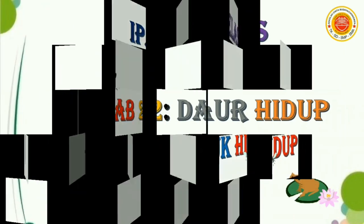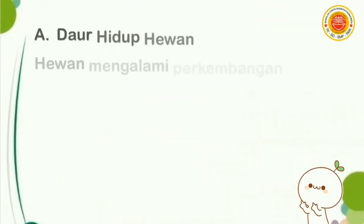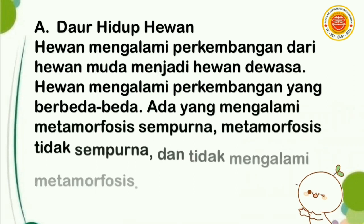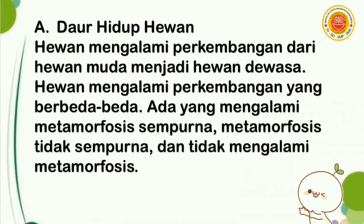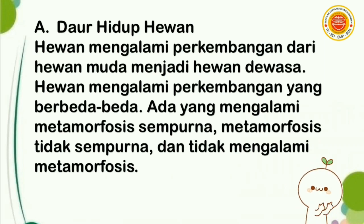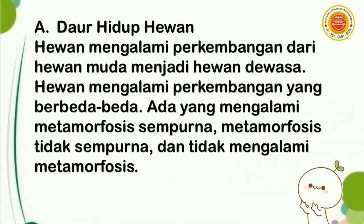Buka buku cetak EPUB dan buka halaman 28 bagian A, daur hidup hewan. Hewan mengalami perkembangan dari hewan muda menjadi hewan dewasa. Hewan mengalami perkembangan yang berbeda-beda. Ada yang mengalami metamorfosis sempurna, metamorfosis tidak sempurna, dan tidak mengalami metamorfosis.